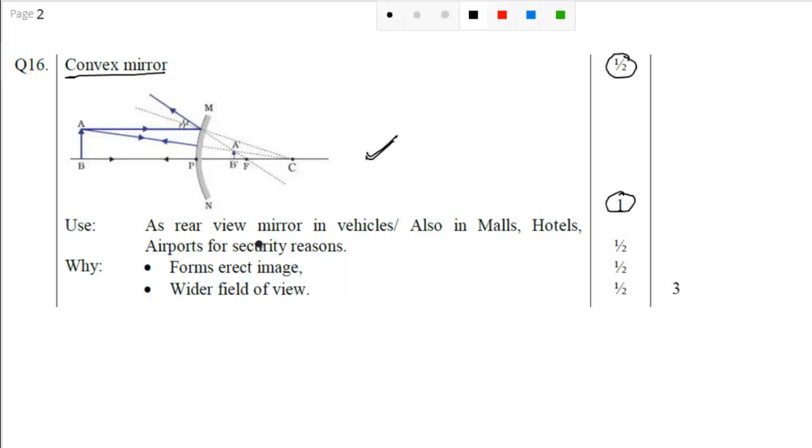As rear view mirror in vehicles, also in malls, hotels, airports for security reasons. Why? Because it forms an erect image and because the image is diminished, it can cover a wider field of view. I hope it is clear to all of you. Thank you.